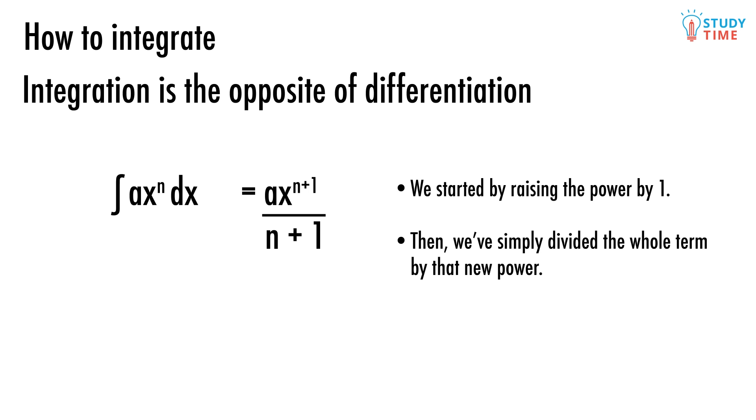What exactly have we done to the equation in this single step? We started by raising the power by one. Remember that whenever we differentiate, the last thing we do is decrease the power by one. So when we do the reverse, it makes sense that the first thing we do is increase the power. Then we've simply divided the whole term by that new power. This is the opposite of multiplying that we do whenever we differentiate. So when it boils down to it, integration is really nothing more than the opposite process of differentiation. That's why we sometimes call what we've just done anti-differentiation.